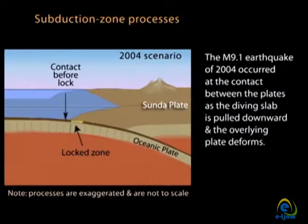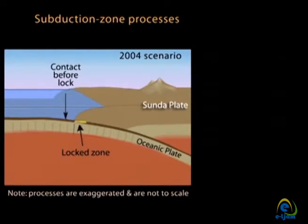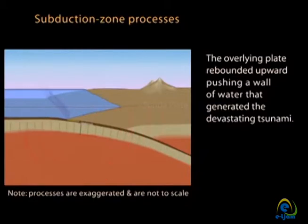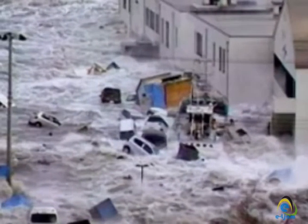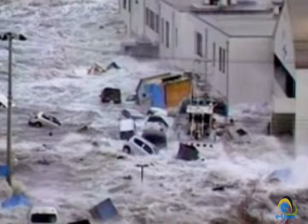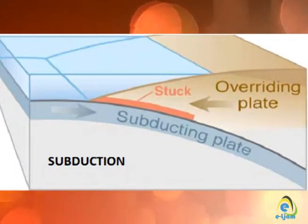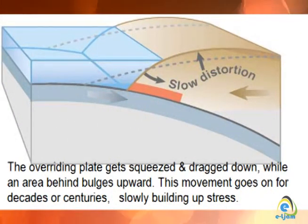A massive subduction earthquake occurred on December 26, 2004. Its center was under the Indian Ocean, off the coast of Sumatra, where two plates met in a subduction zone. The earthquake measured 9.1 on the moment magnitude scale. Although the quake was very destructive on land, it produced a tsunami that was even more destructive. This Boxing Day tsunami destroyed millions of dollars worth of property and killed nearly 200,000 people in 14 countries.